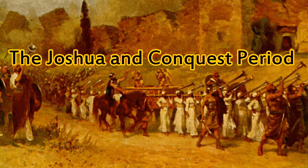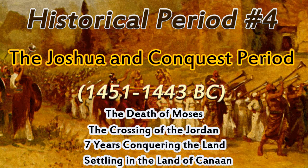Historical period number four, the Joshua and Conquest period, 1451 to 1443 BC. The main events surrounding Joshua and the Conquest were number one, the death of Moses, which was the period when Moses gave his final speech to the Hebrews regarding all the promises that God had given to them. He reminded them that if they would obey God, they would be blessed, but if they disobeyed God, they would be cursed and scattered throughout the earth, and a sword of persecution would follow them wherever they went. Moses died on Mount Nebo after becoming frustrated with the people and losing the blessing of God in entering the land. He would only see the land, and then it would be Joshua who would lead them in.